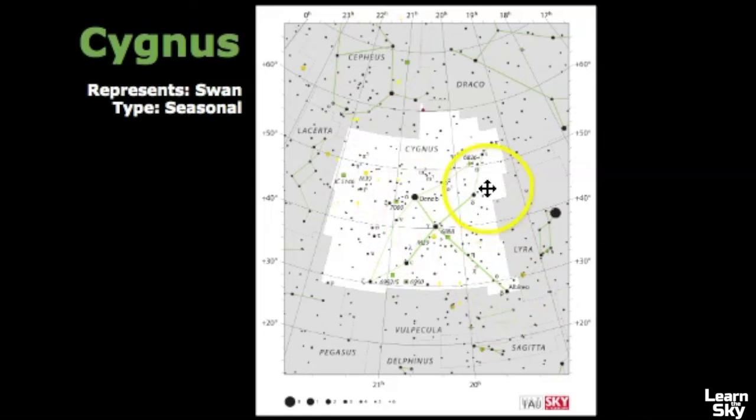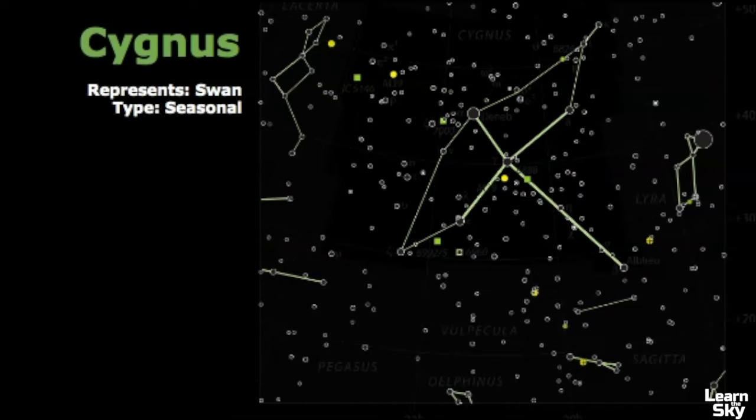However, this big cross-like shape in the pattern of Cygnus makes it really easy to identify. If we were to zoom in and get a closer look at the pattern here, you can see this main cross pattern is that Northern Cross asterism I was talking about earlier.